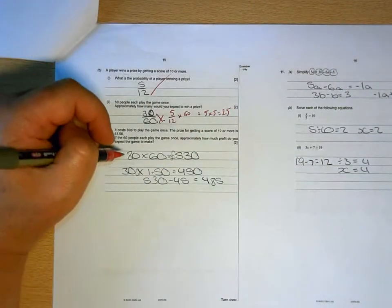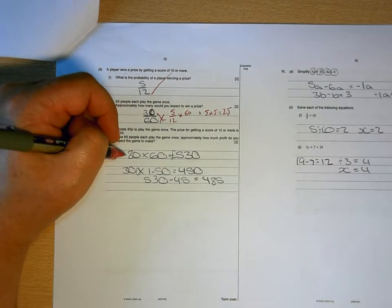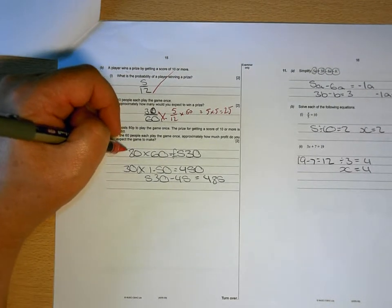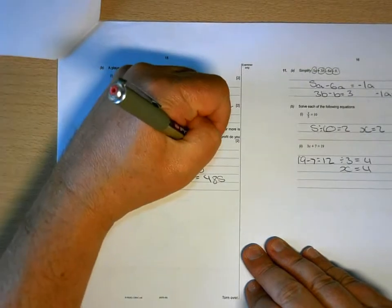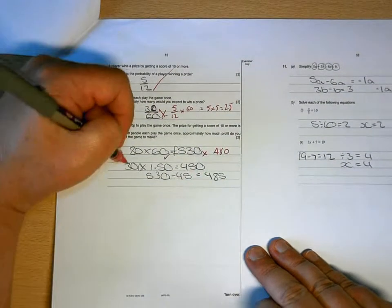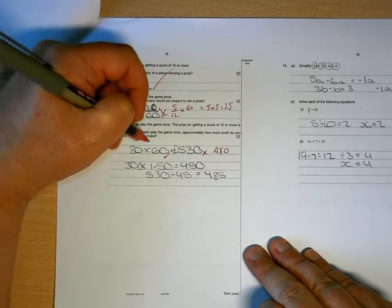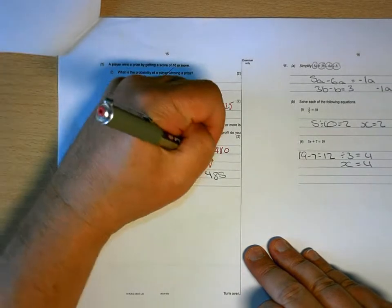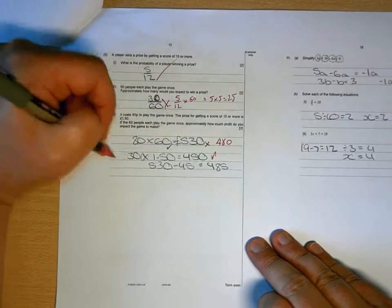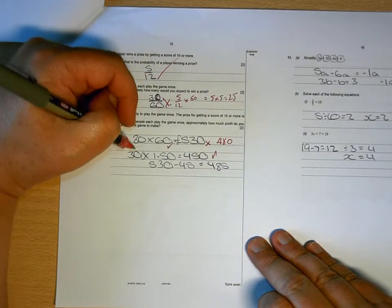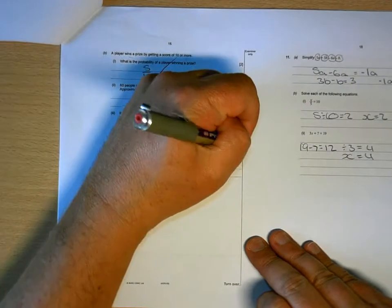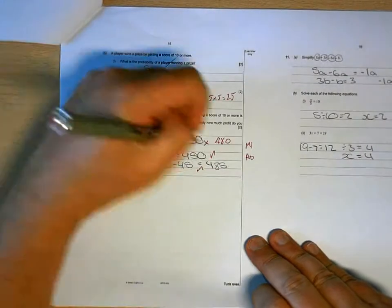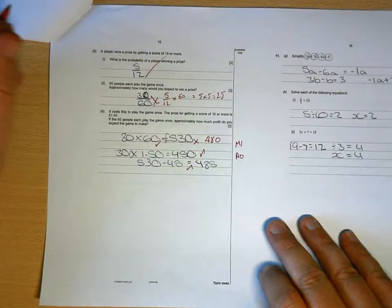30, 80, what have we got there? 80 times 60 is correct, but 6, 8 is 48, so that would be 480. 30 lots of 1 pound 50 is 45, and that's right. They'll take your wrong answer and then you'll do that subtraction which will give you that, so your method is right but you've made some arithmetic errors there.